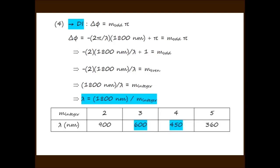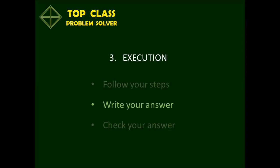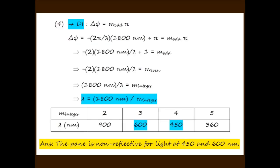We now find the values of lambda that fall within the range 400 to 700 nanometers. By trial and error, the two values of M that fulfill this condition are M = 3 and M = 4, giving corresponding wavelengths of 600 nanometers and 450 nanometers. These are our final answers.